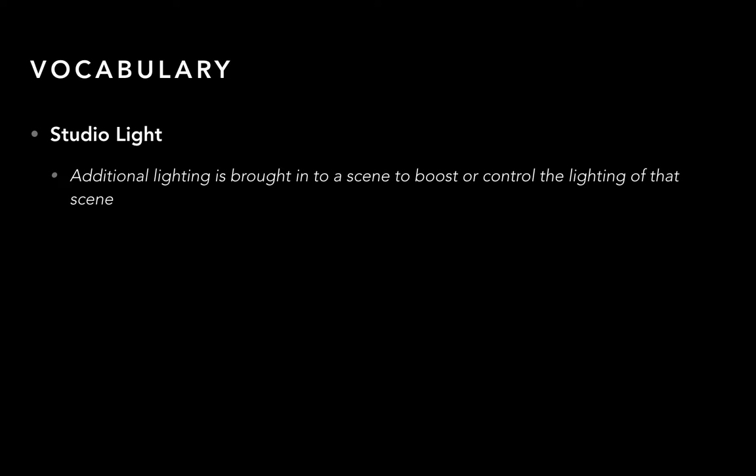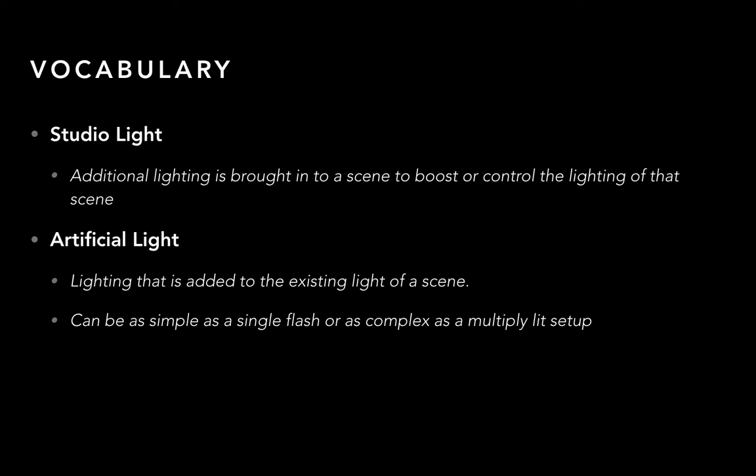When we talk about studio light or artificial light, this is light that you're bringing into the scene to boost or control the lighting. If you have fluorescent lights overhead, you may bring in more lights. In the art rooms we have incandescent spotlights — we could have those on but also bring in additional spotlights to make the room brighter and control where the light is. You guys in photo one played around with the studio light, the silver light setups. Artificial light can be as simple as a single flash or as complex as a multiple light setup, which we're going to talk about.